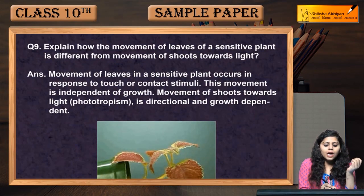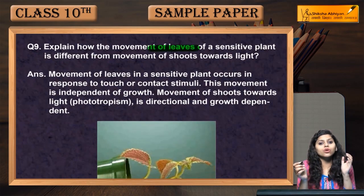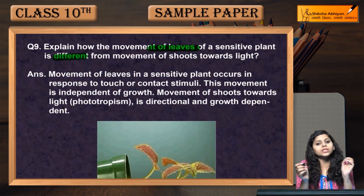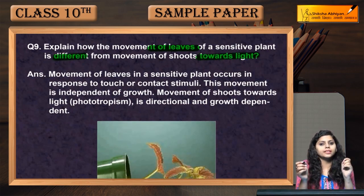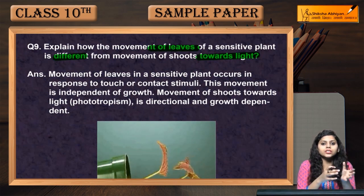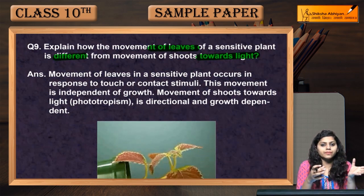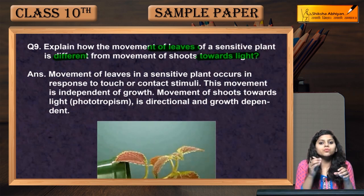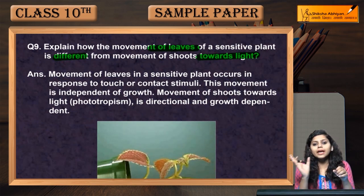Question 9: Explain how the movement of leaves of a sensitive plant is different from the movement of shoots towards light. There are some sensitive plants that show movement when touched. That is different from the movement of shoots towards light.